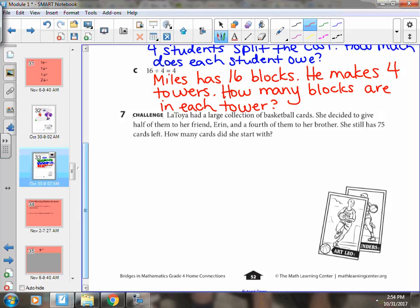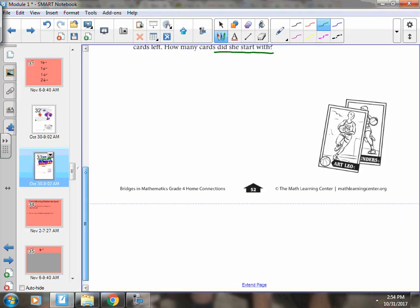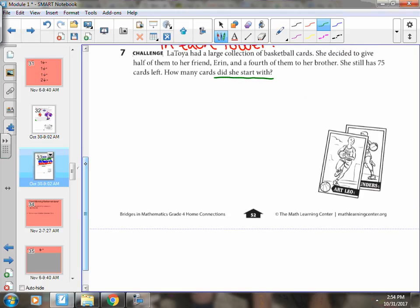Number seven. Latoya had a large collection of basketball cards. She decided to give half of them to her friend, Aaron, a fourth of them to her brother. She still has 75 cards left. How many cards did she start with? I had to read this question quite a few times, and I think the best way to answer it is to draw a picture to help.